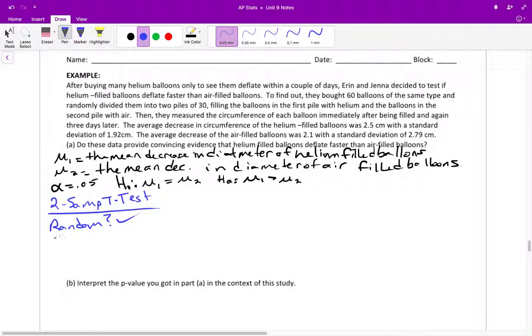Second thing, let's check our sample sizes. We were given a sample of 30, so multiply by 10. Could you have potentially bought more than 300 balloons of either of these two types? And I would say, yes, we're good to go there.